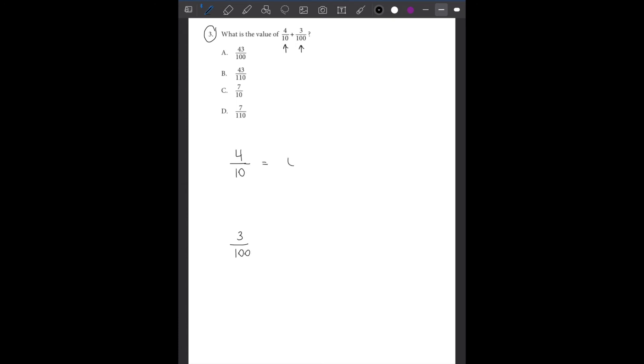So we have 4 over 10 and 3 over 100. Basically, this answer is going to be 0.4, and that is because the 4 is in the tens place. And this is 4 over 10. For 3 over 100, it's going to be 0.03. And the 3 is going to be in the hundreds place because it's 3 over 100. So this is the tens place, this is the hundreds place.